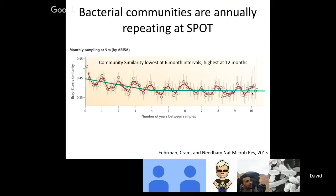In addition to bacteria being abundant and having seasonal cycles, we've also been measuring attributes like their growth rates. We know they are growing quite rapidly, especially in the spring. Here I'm showing the community turnover time — that is the biomass divided by the growth rate via leucine incorporation. Turnover times are on the order of about five days in the surface layers across the year, but can be down to one or two days during April, the most productive times. This is one of the reasons I wanted to look at fine-scale resolution of bacteria, virus, and eukaryotic communities, because this is the scale at which these organisms are growing and dying.